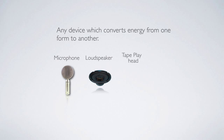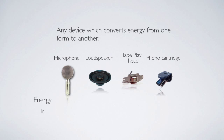Here are some examples: microphone, loudspeaker, tape head, phono cartridge. For the microphone, energy in is sound or acoustic energy. The loudspeaker is kind of the reverse — electrical energy goes in and acoustic energy comes out, just the reverse of microphones. We're going to talk about how their design types are very similar in some cases.